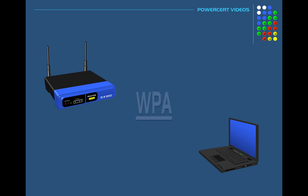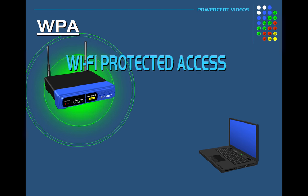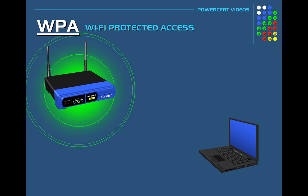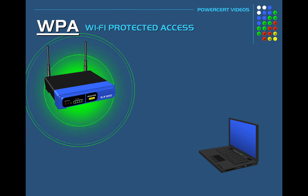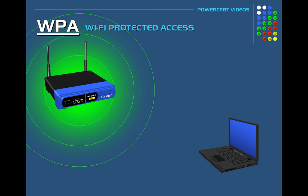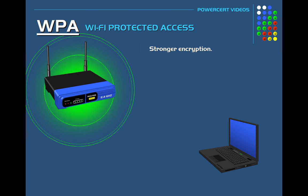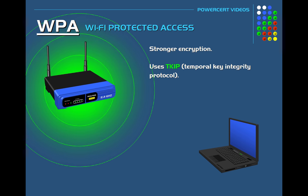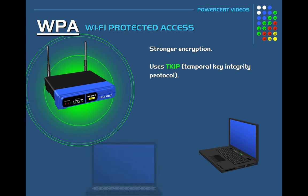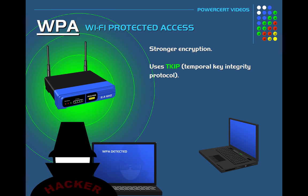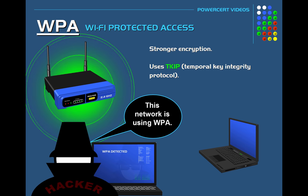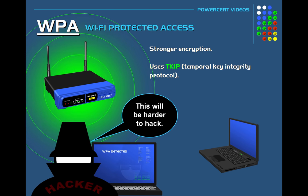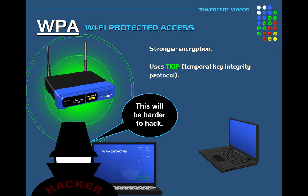That brings us to WPA. WPA, or Wi-Fi Protected Access, is another wireless security protocol developed to solve the problems of WEP. WPA is far better than WEP because it uses a stronger encryption method called TKIP, which stands for Temporal Key Integrity Protocol. TKIP dynamically changes its keys as it's being used, which ensures data integrity. But even though WPA is more secure than WEP, it is still outdated today because TKIP did have some vulnerabilities.